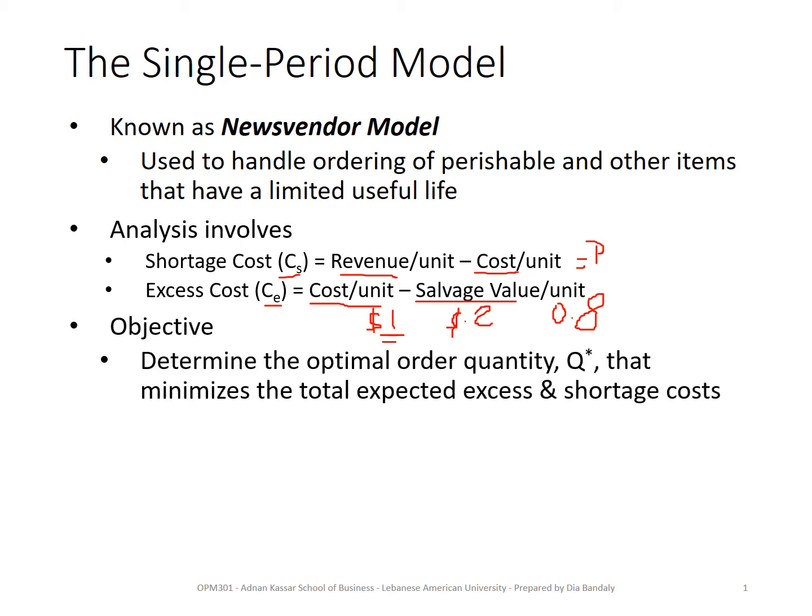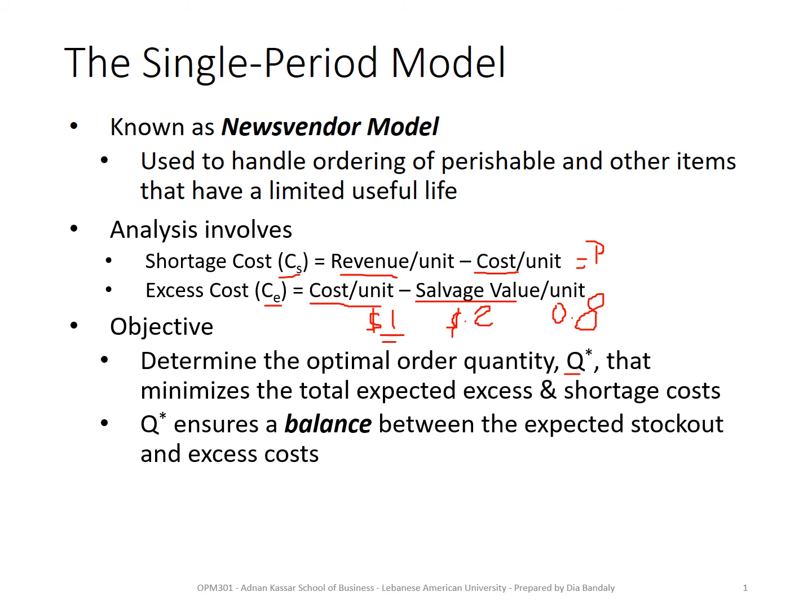What is the objective of our news vendor model? Of course, we need to find out what should be our optimal stock level — ordering quantity, inventory level — Q star. This Q star, recalling the trade-off between surplus cost and shortage cost, would minimize the sum of the expected shortage and excess costs. So it ensures a balance between these two.